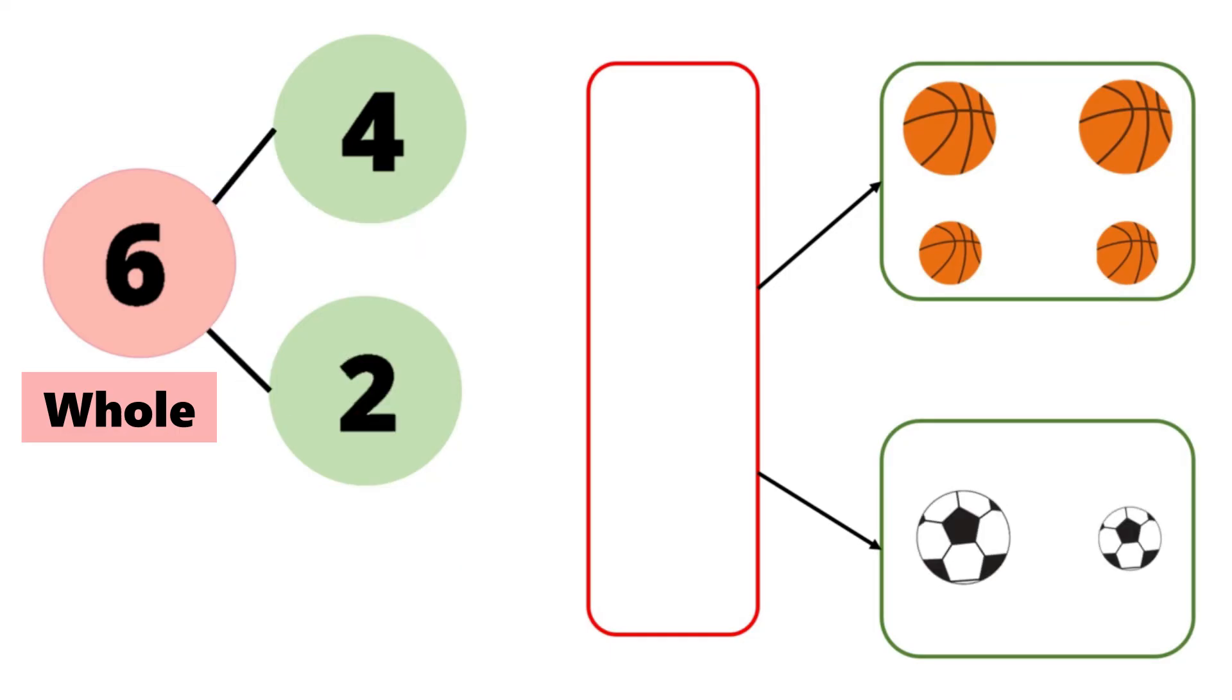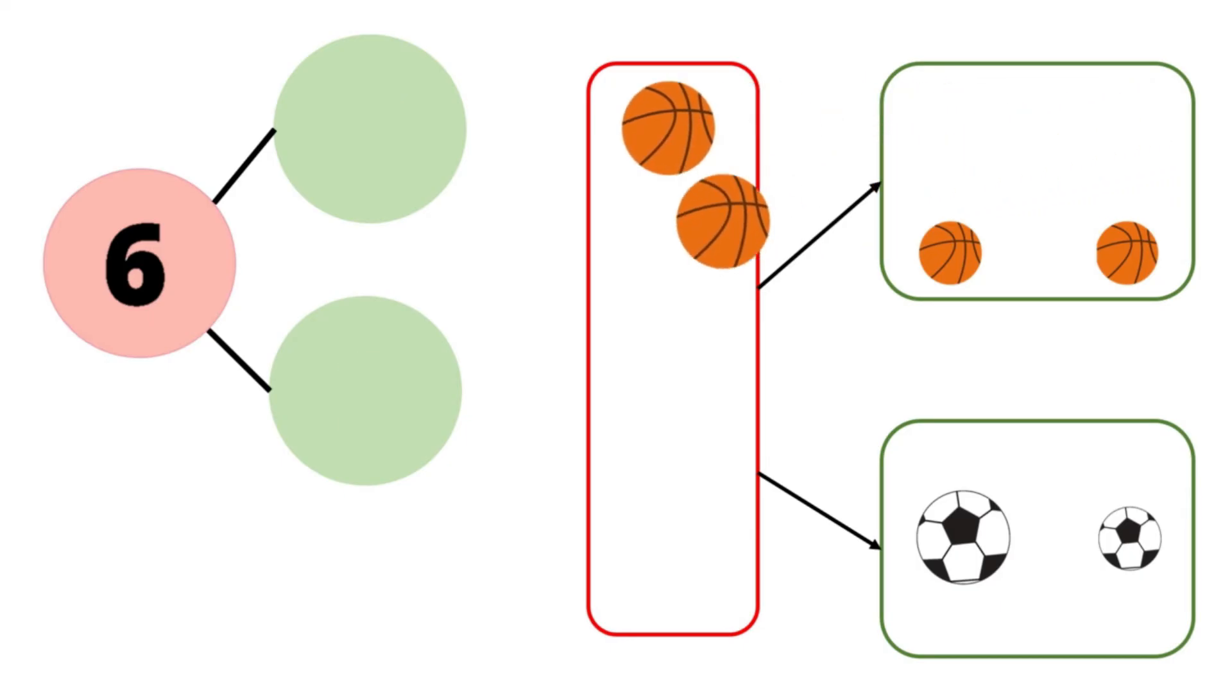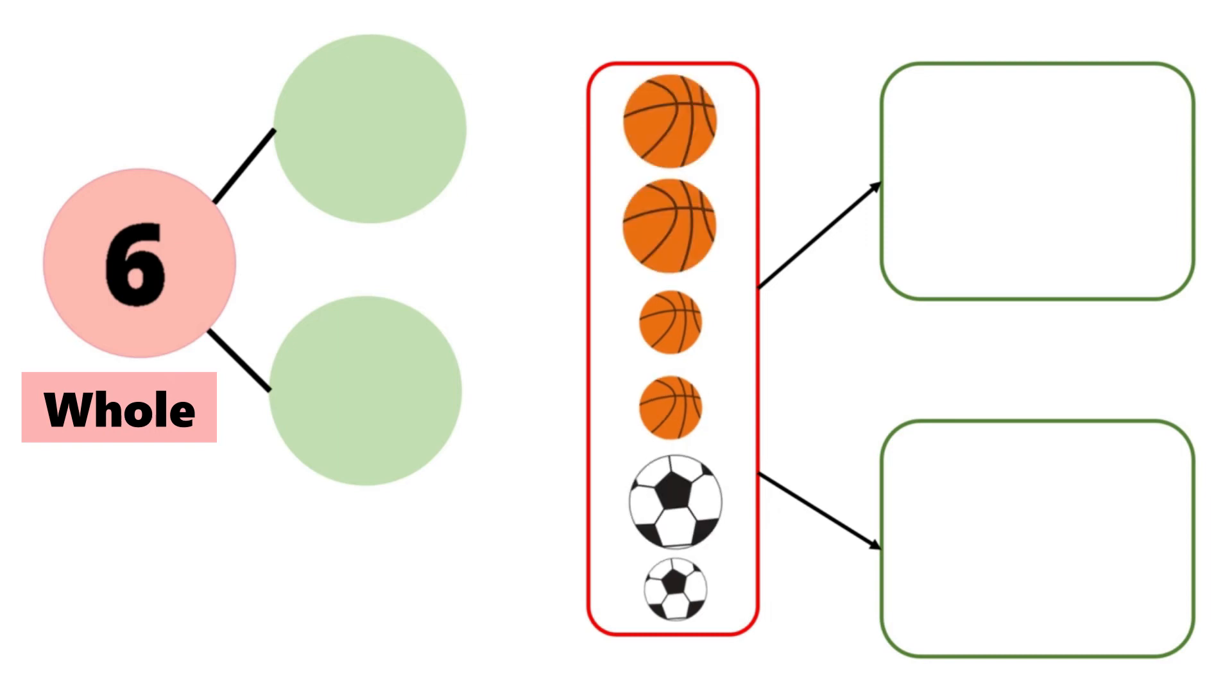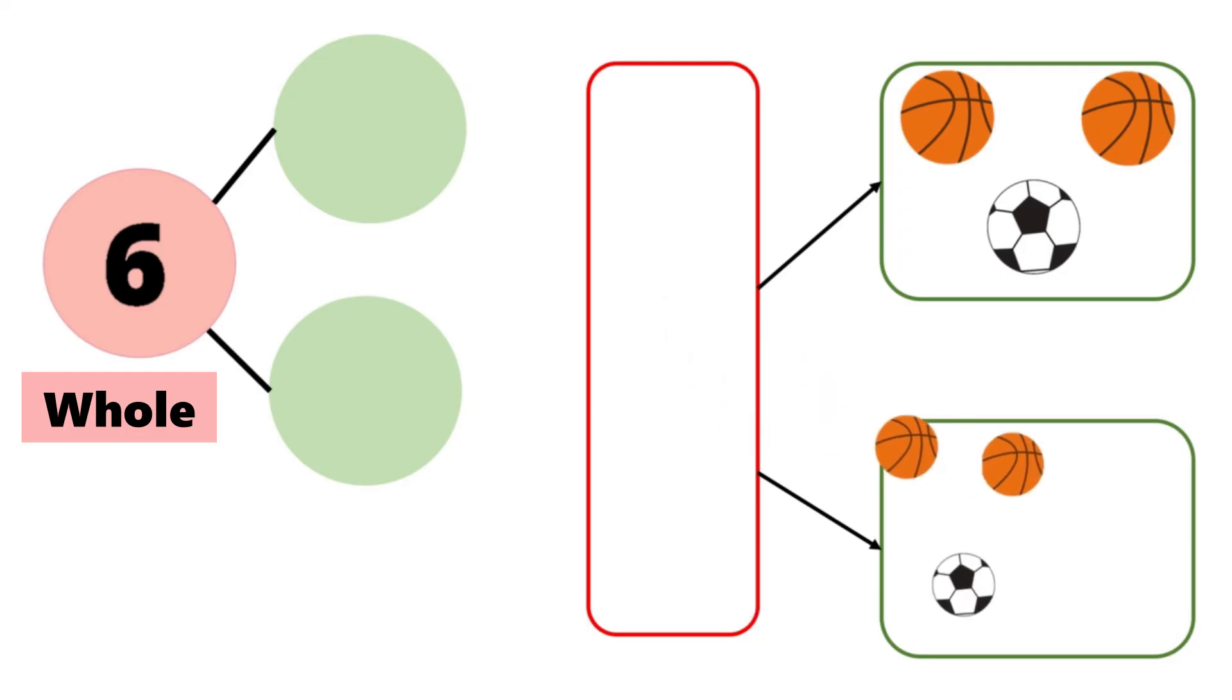Can we break up the whole in another way? Let's put the balls back first. We still have six balls altogether. Some are big balls, some are small balls. So let's break them up according to size. Big balls together, small balls together.